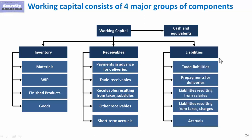Last but not least, the liabilities. We have trade liabilities as the biggest position, then prepayments we have received but haven't delivered goods or services for, liabilities resulting from salaries, liabilities resulting from taxes and charges, and accruals on the liability side. Those four major groups enable us to calculate working capital — how much money, apart from fixed assets, we have to invest for the company to actually work and produce money.